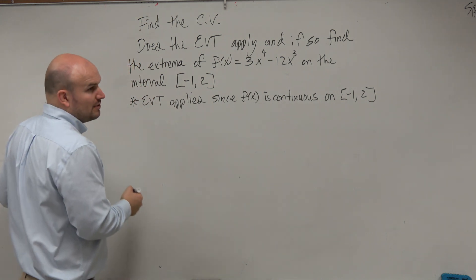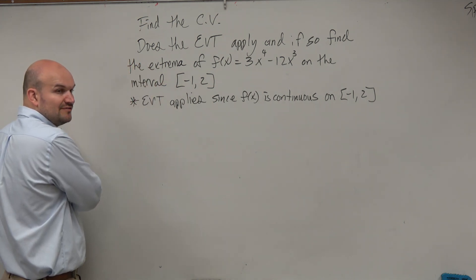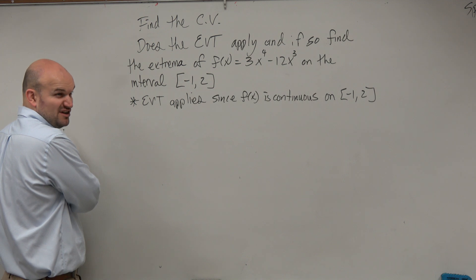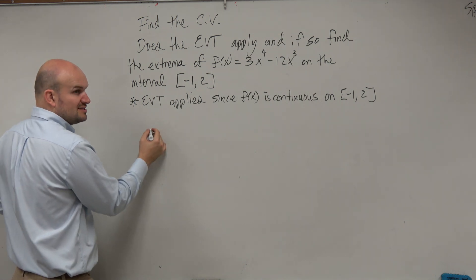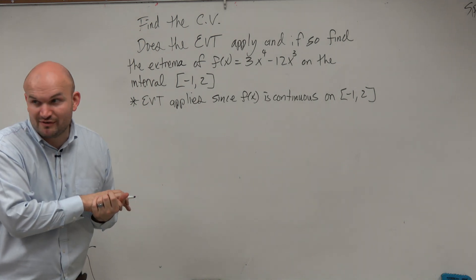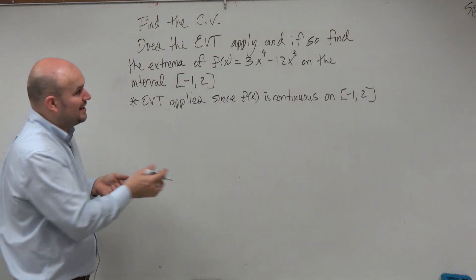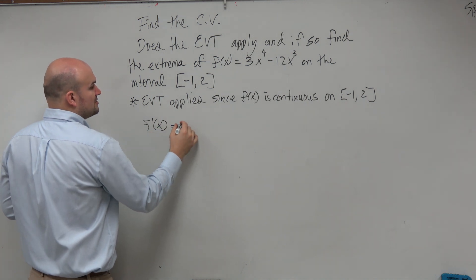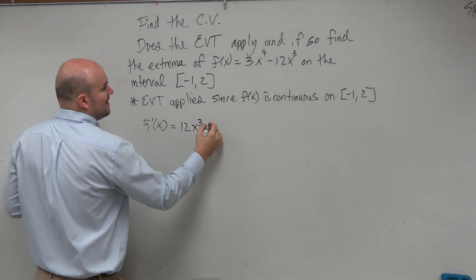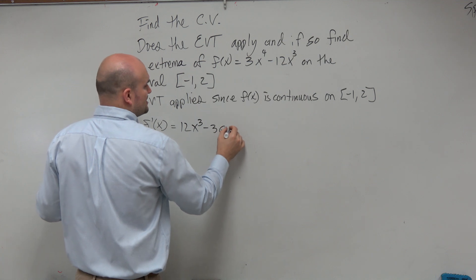So the first thing we want to do then is if we want to find the critical values, we can either find when the derivative is equal to 0, or when the derivative is undefined. So the first thing is, either way, we should find the derivative. OK, so we take f(x) and let's find f'(x). That's going to be 12x^3 - 36x^2.